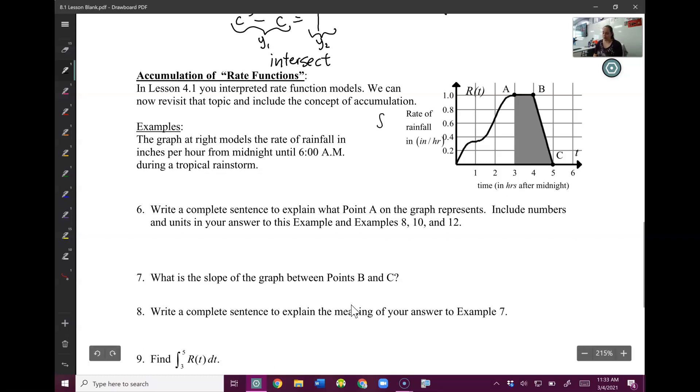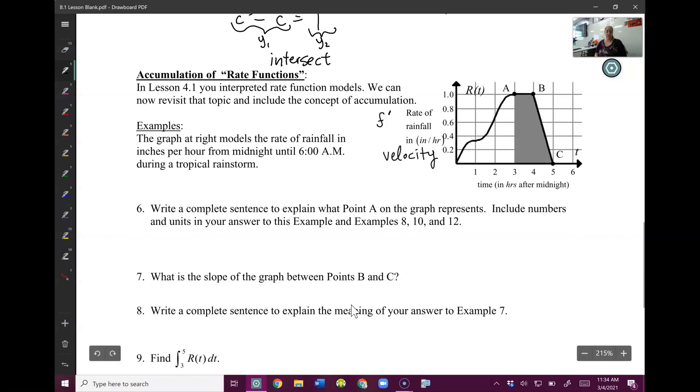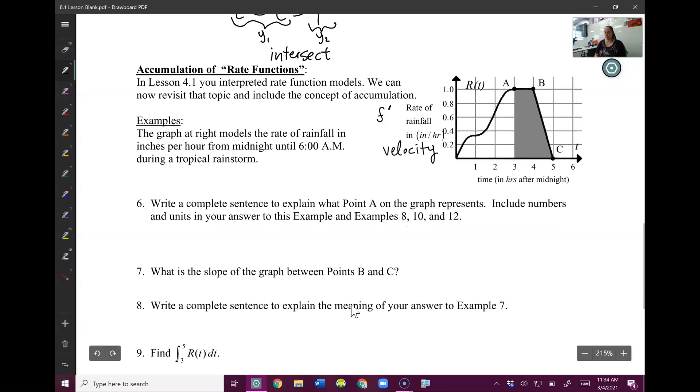This is a graph of a first derivative, a.k.a. velocity. Velocity is always a rate, miles per hour, inches per minute, that sort of thing. So this graph is actually the graph of the velocity, not the position, which is something we'll want to be very careful of as we're answering these questions. And it models the rate of rainfall from midnight until 6 a.m. So there's our graph that we're going to focus on this whole time. So let's start with number 6.